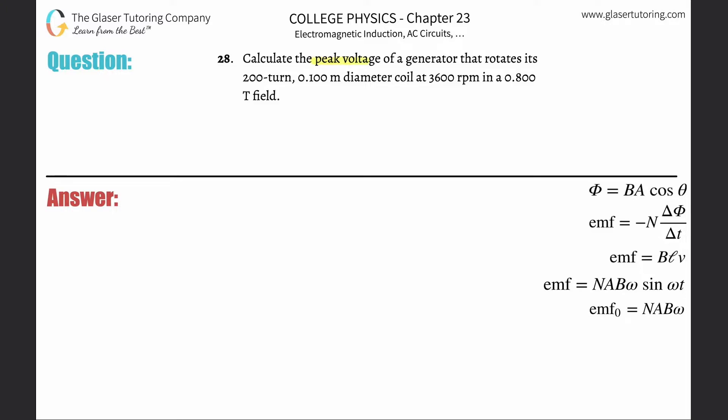Number 28, calculate the peak voltage of a generator that rotates its 200-turn, 0.1 meter diameter coil at 3600 revolutions per minute in a 0.8 tesla field.